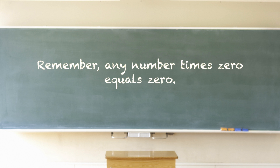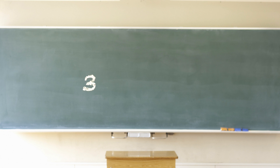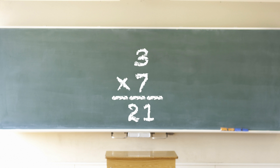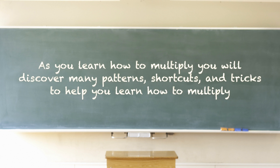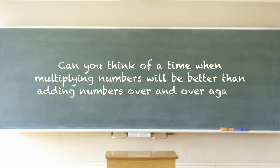Remember, any number times zero equals zero — for example, three times zero equals zero. Here is another way multiplication problems can be written: the product of three times seven is 21; the product of eight times five is 40. As you learn how to multiply, you will discover many patterns, shortcuts, and tricks. Can you think of a time when multiplying numbers will be better than adding numbers over and over again?